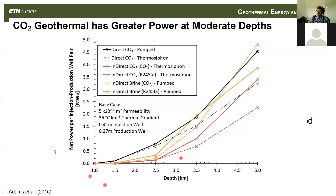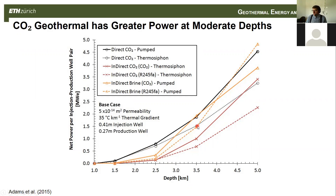This is a figure from our 2015 paper where we plot power generation versus depth for several different types of geothermal plants. The black ones are our CO2 direct geothermal plants, or CPG power plants, and the orange are our indirect brine systems like the ones we estimated last week. For this intermediate range of depths, there are places where CO2 power generation can be much greater than the power generated with water in an indirect brine system.